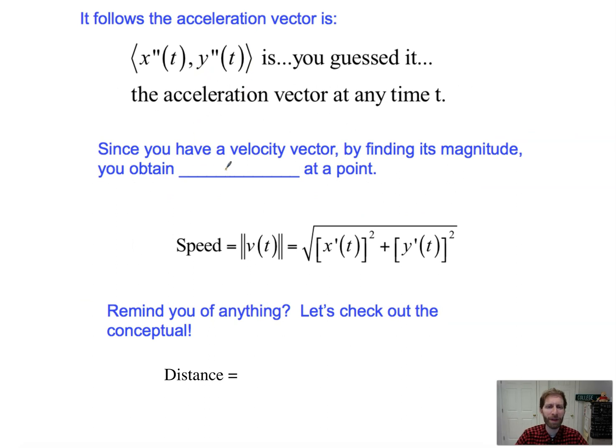I have a fill in the blank here for some reason. So since you have a velocity vector, by finding its magnitude, how much it is, you obtain, I have the answer down there, speed at a point. So the speed, which sometimes is denoted with these double bars, almost looks like a super insulated absolute value of v of t, is equal to, and here's your function. And that should remind you of arc length.